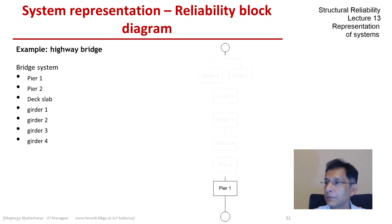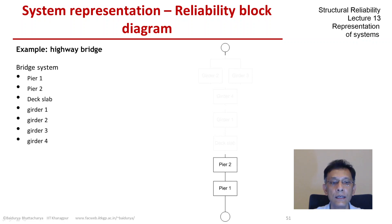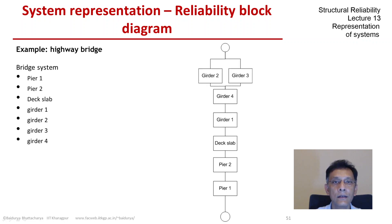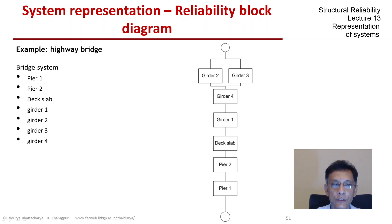So with this understanding of the bridge mechanics, let's build up the RBD block by block. Pier one is the first element. Pier two would be in series with that. The deck slab is also in series. Girder one, the left end girder, is essential so it's also in series. Girder four, the other end girder, is also in series. But girder two and girder three are in parallel — at least one of them must work for the bridge to be okay, so both of them need to fail for the bridge to be declared in a failed state.